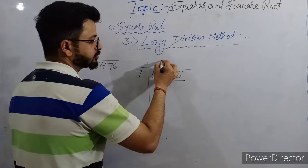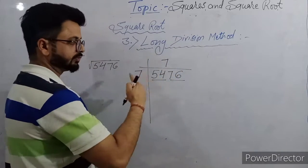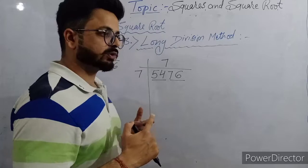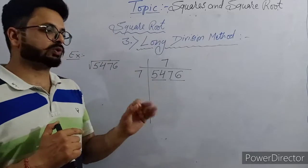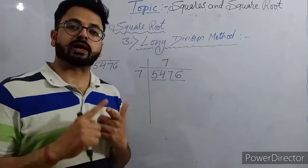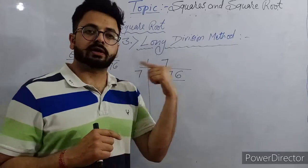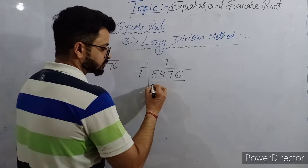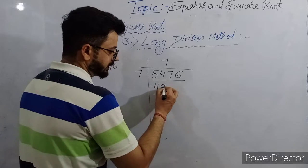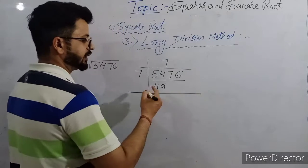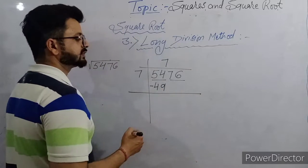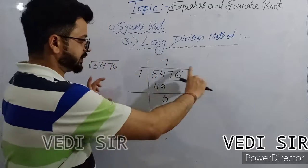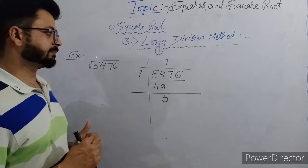So the highest number whose square we can subtract from 54 is 7. We will write 7 here, and here also we write 7 — two times. Seven is the only number whose highest square we can subtract from 54; eight squared is 64, which we cannot subtract. The square of seven is 49, written here. We subtract 49 and get 5. This is the first part of this method.